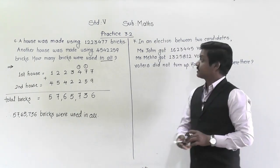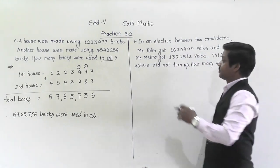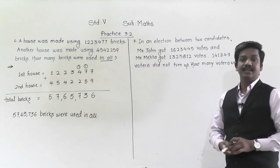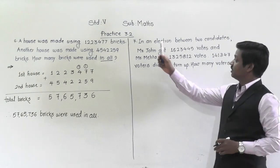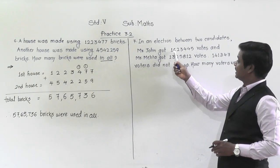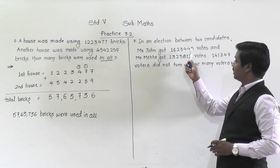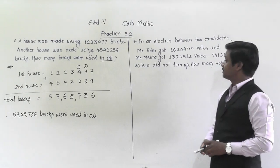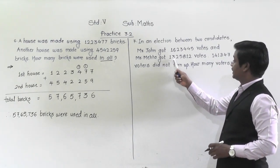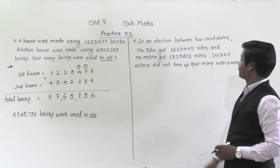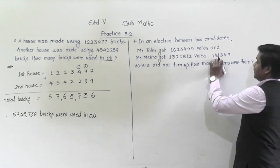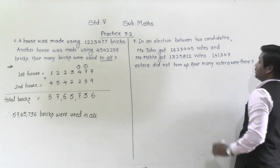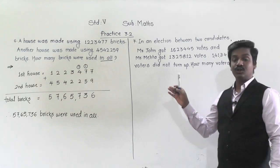Understood. Let's solve the next problem, number 7. In an election between two candidates, Mr. John got 16,23,445 votes and Mr. Mehta got 13,25,812 votes. 1,41,347 voters did not turn up.